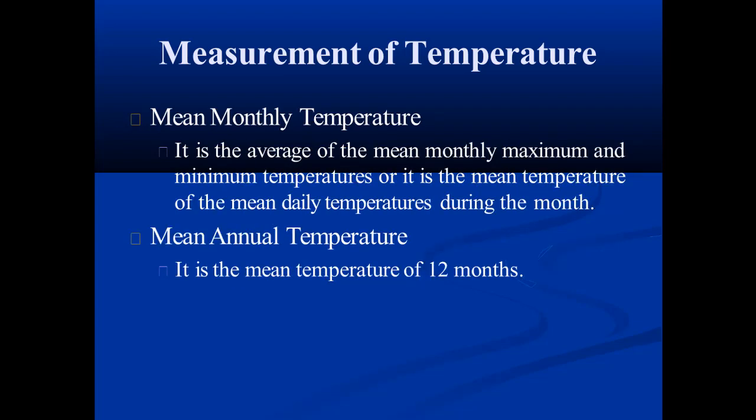Mean monthly temperature is the average of the mean monthly maximum and minimum temperatures, or it is the mean of the mean daily temperatures during the month. Mean annual temperature is the mean temperature of the 12 months of the year.